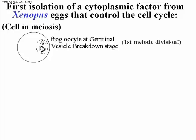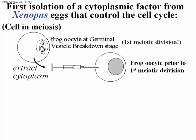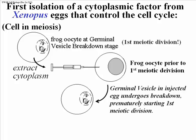The first chemical factor that controlled some aspect of the cell cycle was isolated from developing frogs' eggs. Frogs' eggs are quite large and easily observed through the light microscope. As meiosis I, the first division of meiosis, begins, the nuclear membrane disappears, a process called germinal vesicle breakdown. If the cytoplasm of an egg at the germinal vesicle breakdown stage is collected in a syringe and injected into an egg at an earlier stage, the nucleus in the injected egg immediately undergoes germinal vesicle breakdown, prematurely starting its meiosis I.